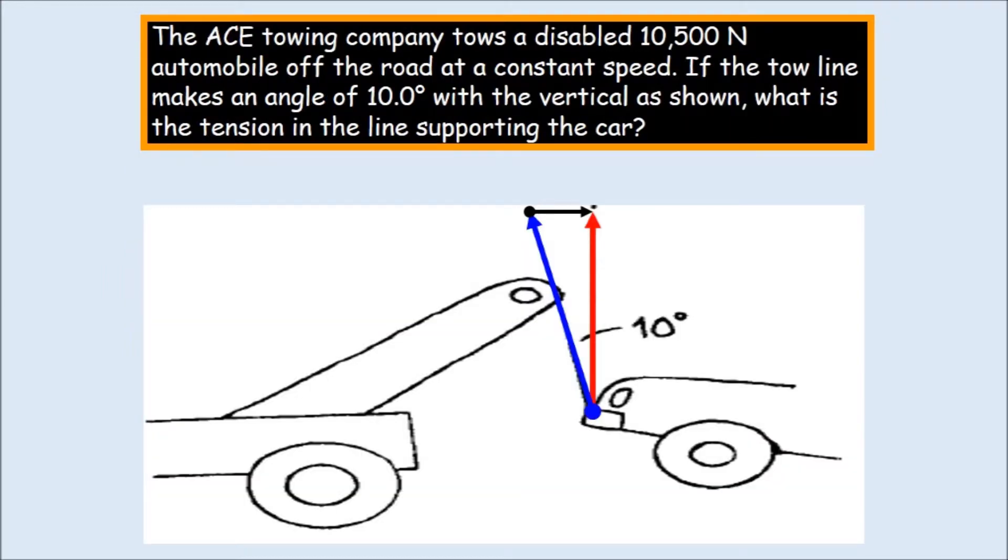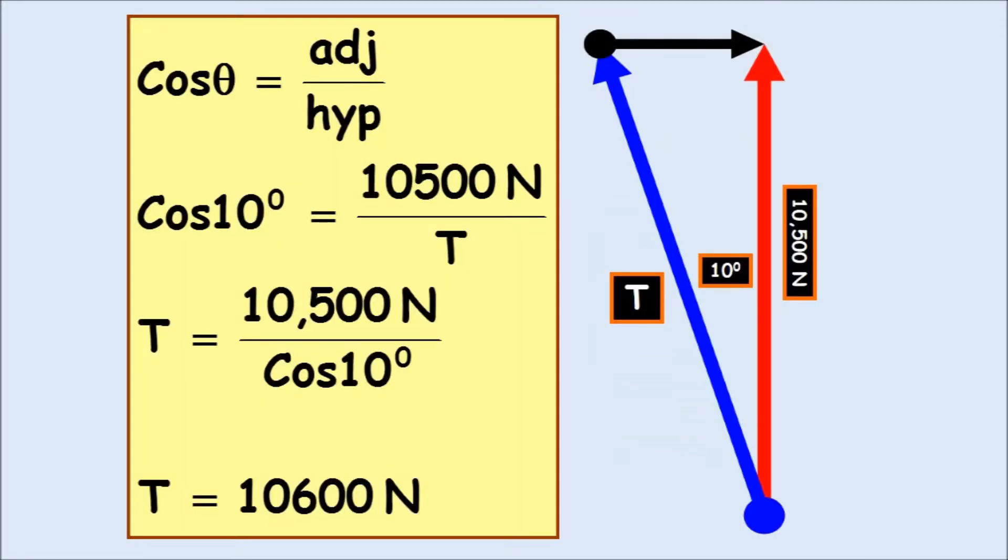The ACE towing company tows a disabled 10,500 newton automobile off the road at a constant speed. If the tow line makes an angle of 10 degrees with the vertical as shown, what is the tension in the line supporting the car? Well, the tension in the line supporting the car would be the blue line. And we know the red line, that's going to be the weight of the car. We know that that's going to be only one line, so the entire red line will be 10,500 newtons. Solving using 10 degrees, we get T equals 10,600.